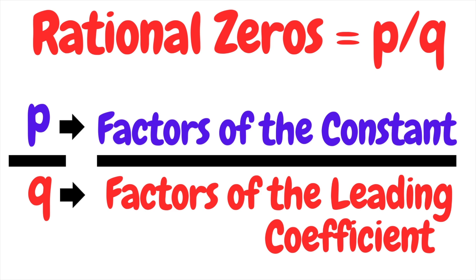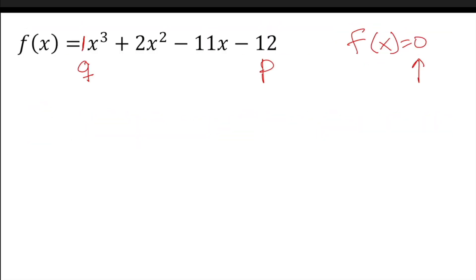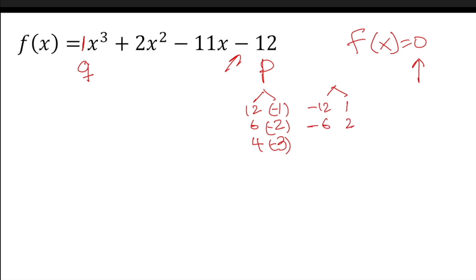The Rational Zero Theorem is P over Q, because rational is a fraction. P represents all the factors of my constant, and Q represents all the factors of my leading coefficient — if there's no number there, you have a 1. Factors of negative 12 are: 12×1, 6×2, 4×3. Because my product is negative, one of the factors has to be negative. To make things easier, we use plus or minus: ±12, ±1, ±2, and so on.